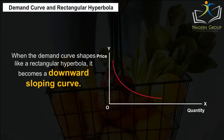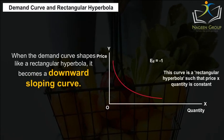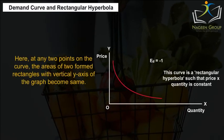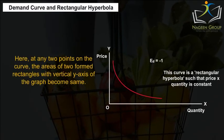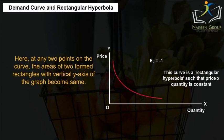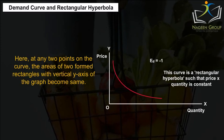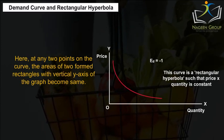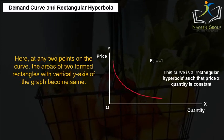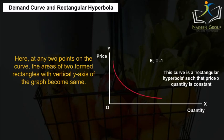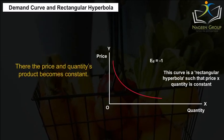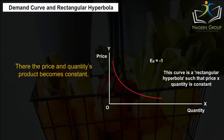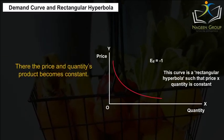The expenditure on the good will change in the same direction as the rate of price changes only when the percentile change in quantity is lesser than the percentile change in price. Demand Curve and Rectangular Hyperbola. When the demand curve shapes like a rectangular hyperbola, it becomes a downward sloping curve. At any two points on the curve, the areas of the two formed rectangles with the vertical y-axis of the graph become the same, and the product of price and quantities becomes constant.